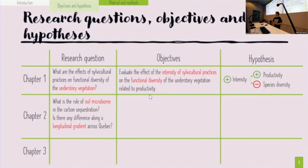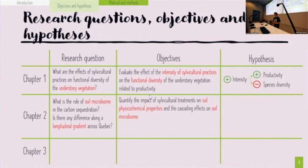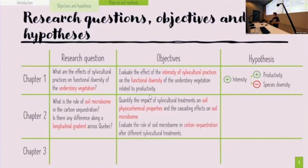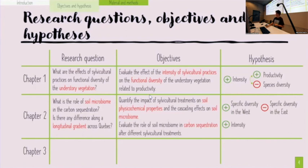In the second chapter, I will focus on soil microbiome — fungi and bacteria — and their role in carbon sequestration, and whether there are differences along a longitudinal gradient across Quebec. I will quantify the impact of silvicultural treatment on soil chemical properties and evaluate the cascading effect on soil microbiome. The main hypothesis is that there will be higher diversity in the west than in the east, and that higher intensity means lesser species diversity.